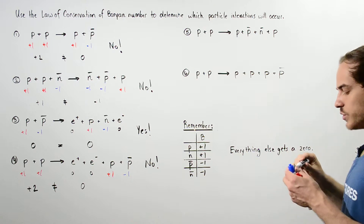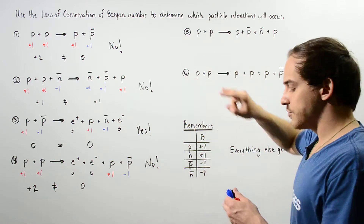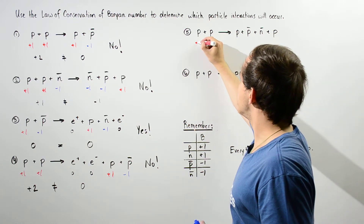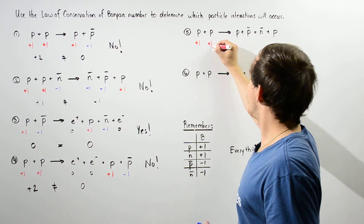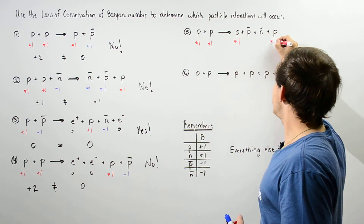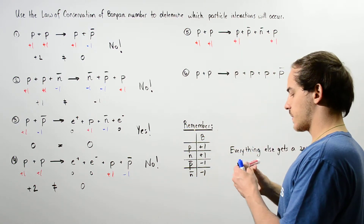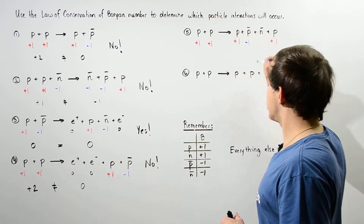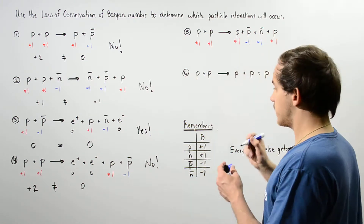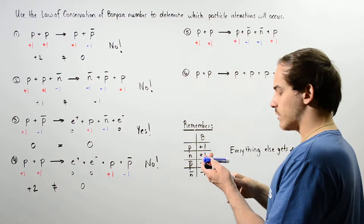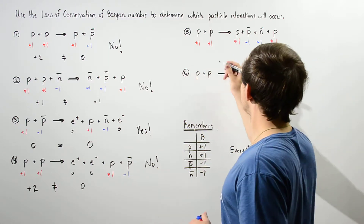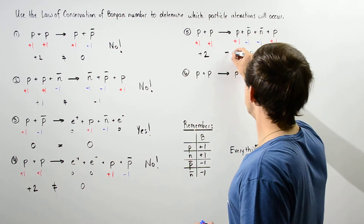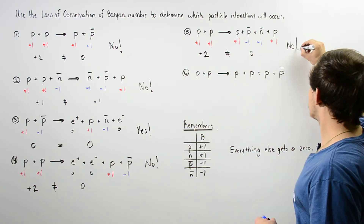Let's move on to the fifth interaction. We have two protons interacting with one another, each getting a plus one, for a left-side total of plus two. We have an antiproton getting negative one and an antineutron getting negative one, so the right side totals zero. Since plus two does not equal zero, this reaction will not occur.